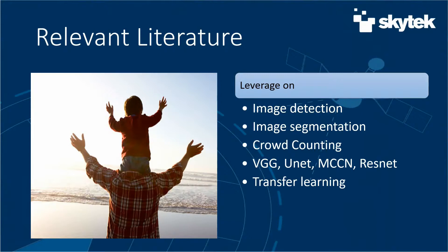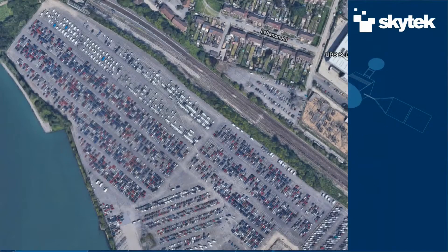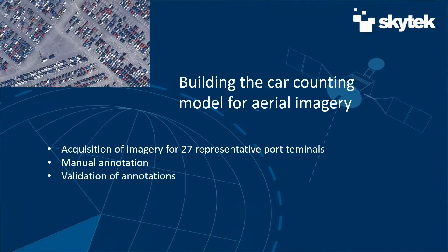We took a special interest in transfer learning to see if it is possible to perform a transfer from the domain of very high-resolution aerial imagery into the domain of satellite imagery. Most of the big cargo terminals in the world are currently covered with really high-resolution Google imagery, typically at 15 cm per pixel resolution.